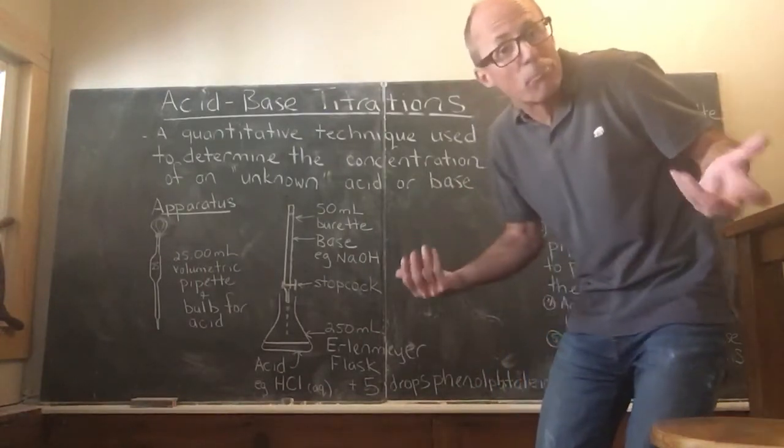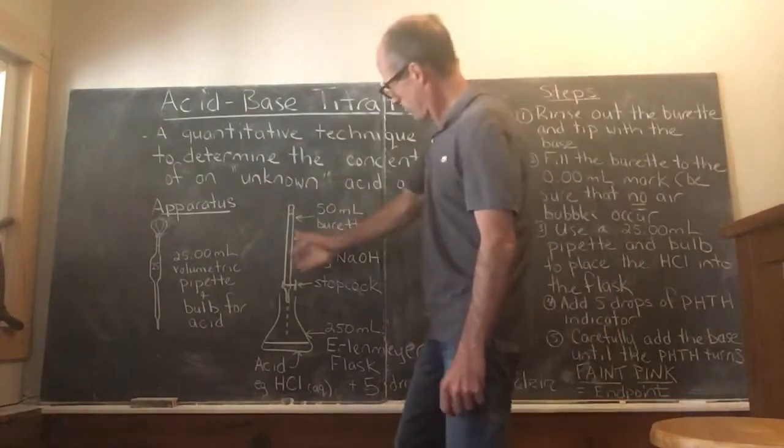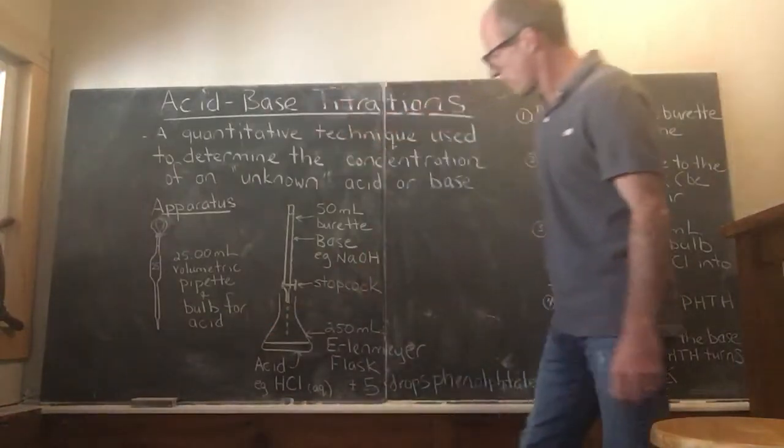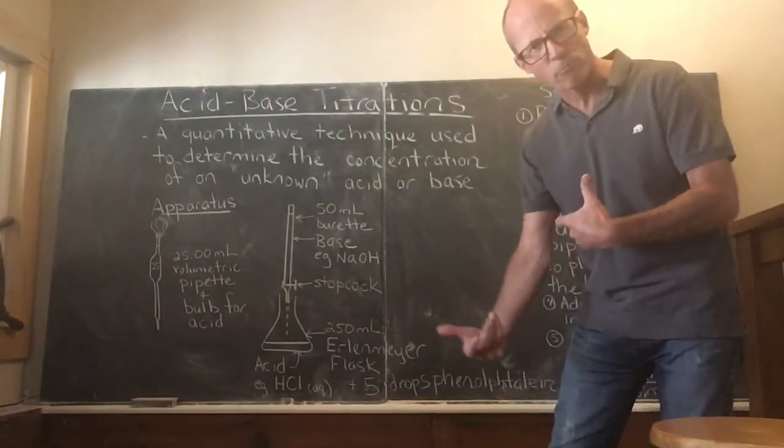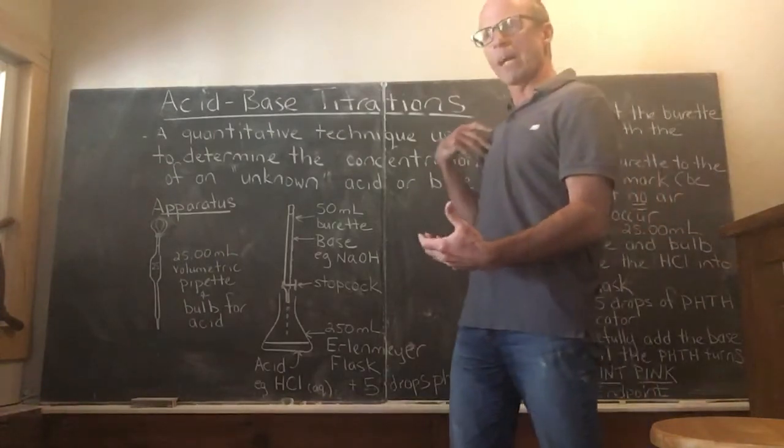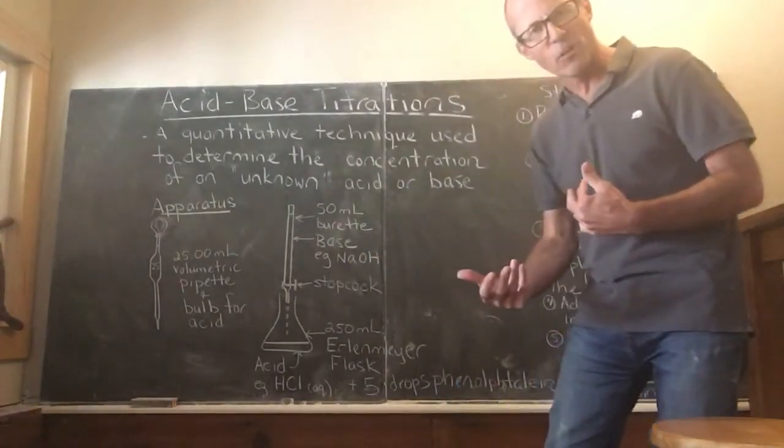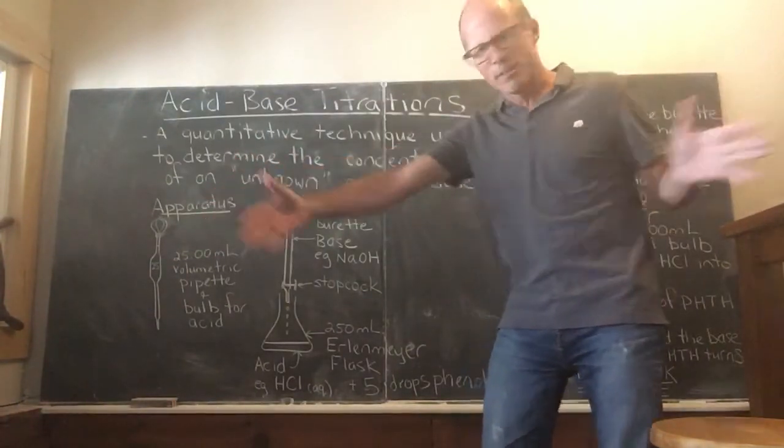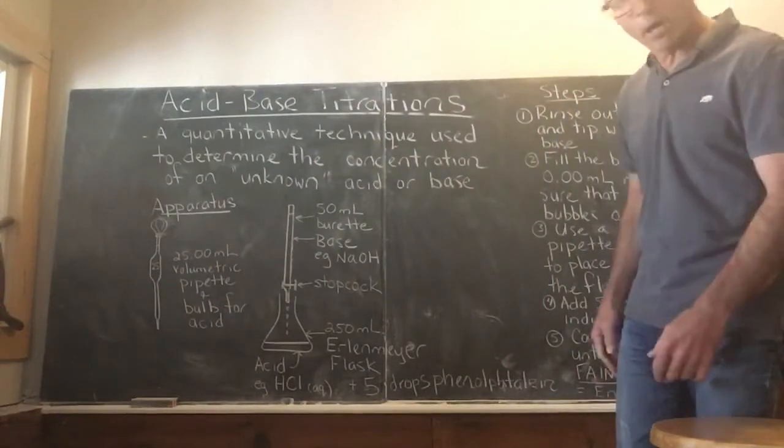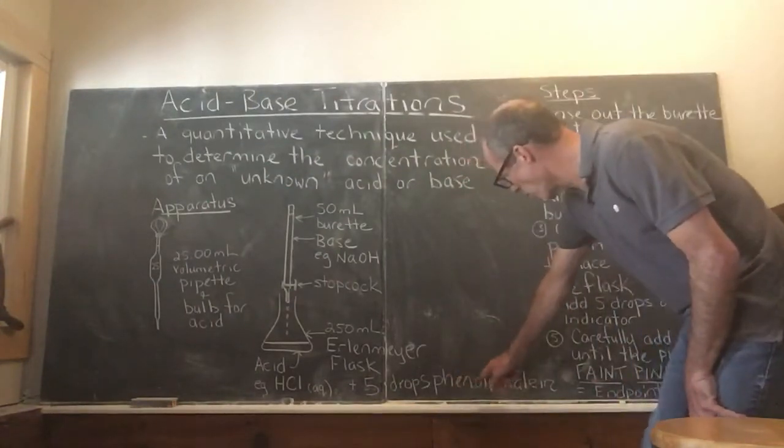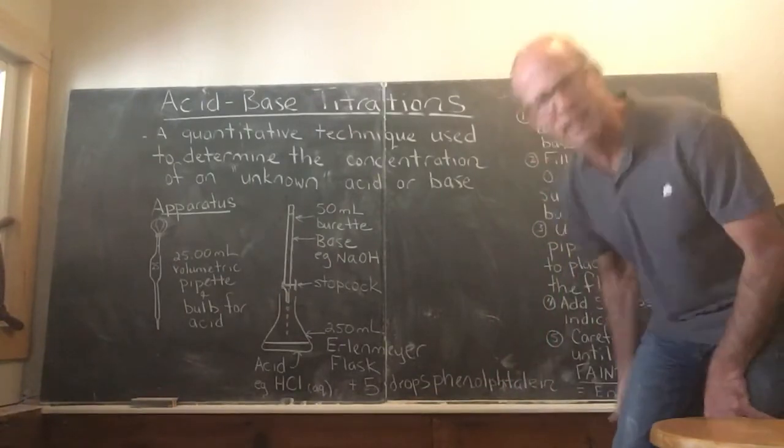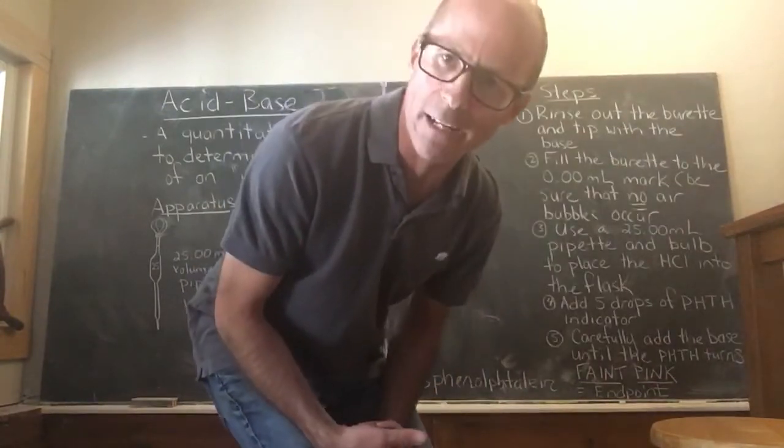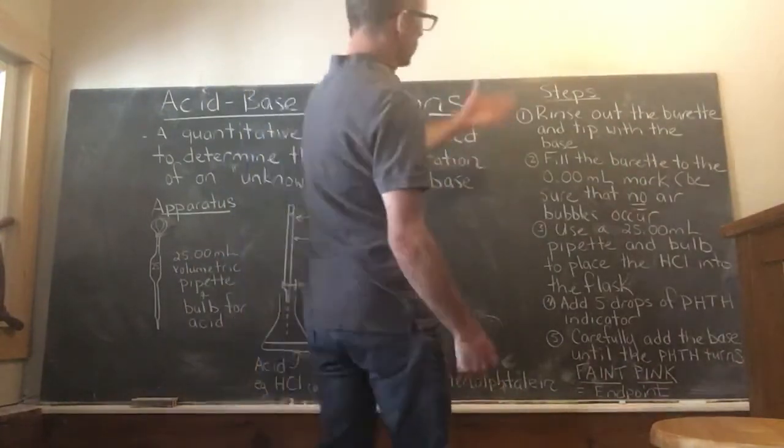So our steps: the acid eventually is going to end up in our flask, and we're going to neutralize the acid with the base. Of course, we have learned about acid-base indicators already. You may remember the one indicator with the big long word, phenolphthalein - that's a hard one to spell: P-H-E-N-O-L-P-H-T-H-A-L-E-I-N, or you could just abbreviate it PHTH, whatever turns your crank.